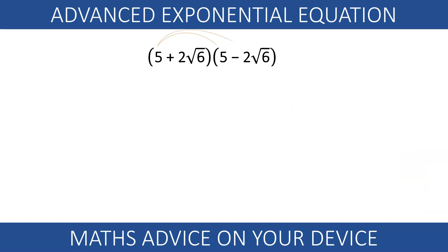Notice that if we multiply 5 plus 2 root 6 by 5 minus 2 root 6, the answer is 1. This is telling us that one is the reciprocal of the other.